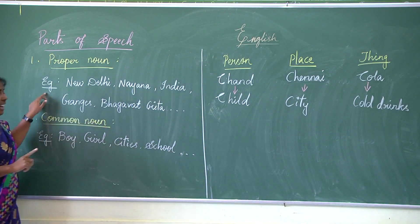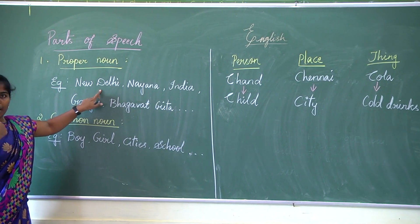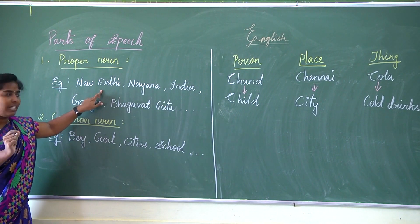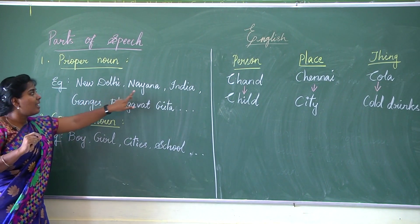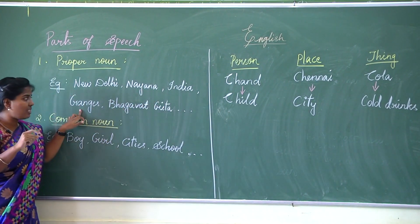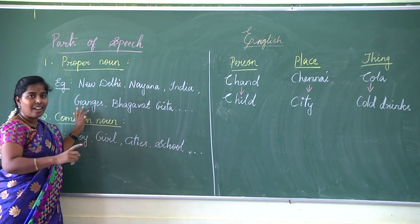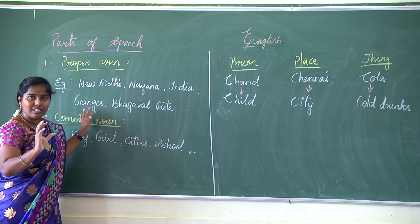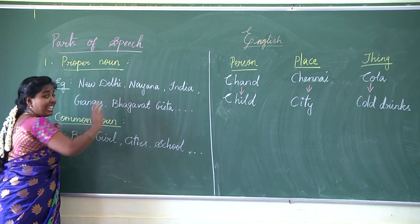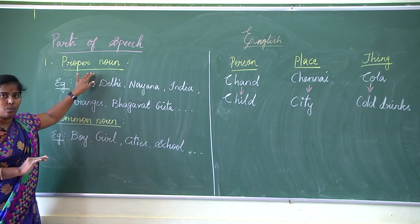I have listed some examples here: New Delhi, Naina, India, Ganges, Bhagavad Gita. All these are particular things where I am specifically concentrating on each individual thing. So all of these are known as proper noun.